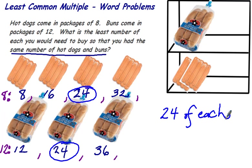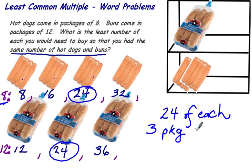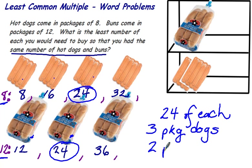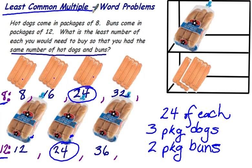We would have to have 24 — that would be our LCM. So we'd need 24 hot dogs and 24 buns. Now the next question is: if you need 24 hot dogs and buns, how many of each package do you need to buy? We need 24 divided by 8, which gives us 3 packages of hot dogs. And for the buns, we need 24 of them; they come in packages of 12, so 24 divided by 12 gives us 2 packages of buns. That's the most common least common multiple problem you'll see — the hot dogs and the buns.